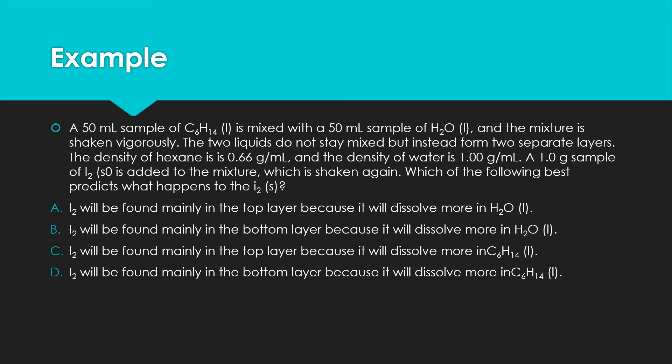So let's look at another example. A 50 milliliter sample of C6H14 liquid is mixed with a 50 milliliter sample of water and the mixture is shaken vigorously. The two liquids do not stay mixed, but instead form two separate layers. Alright, the density of hexane, so that's what this is, is 0.66 grams per milliliter and the density of water is 1 gram per milliliter. So we know we've got a container with two layers of liquid. We've got their densities of each. So I'm going to go ahead and determine which one's going to be on top and which one's going to be on bottom. Well, the lower the density, the more it will float or be towards the top. So this is going to be my C6H14. This is going to be my water since it is more dense. It will go towards the bottom.